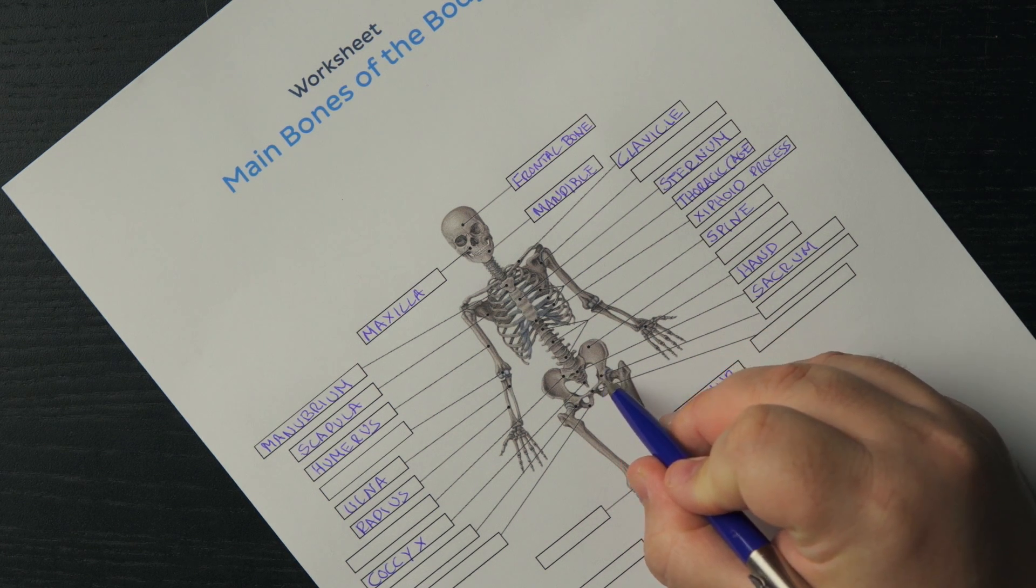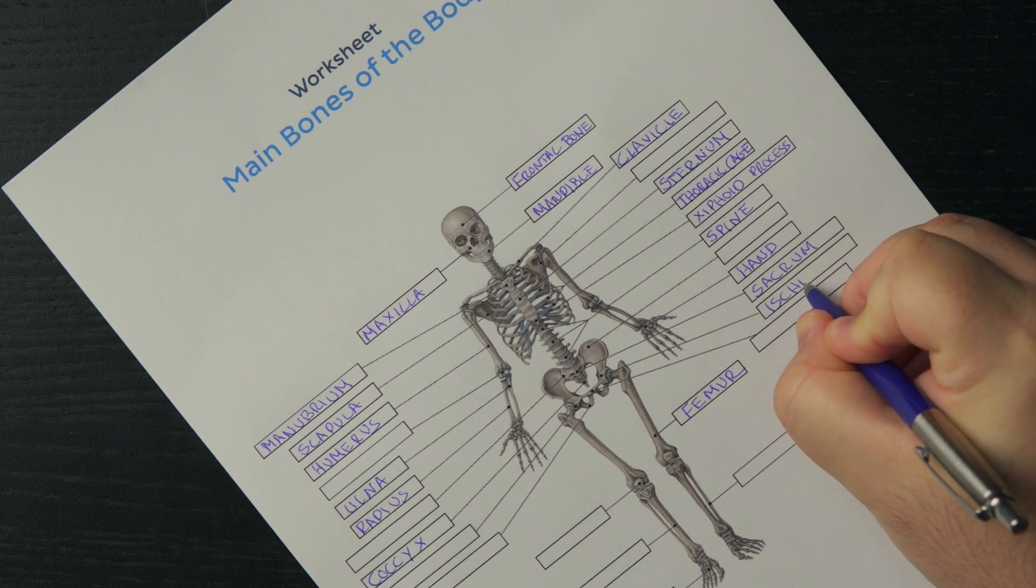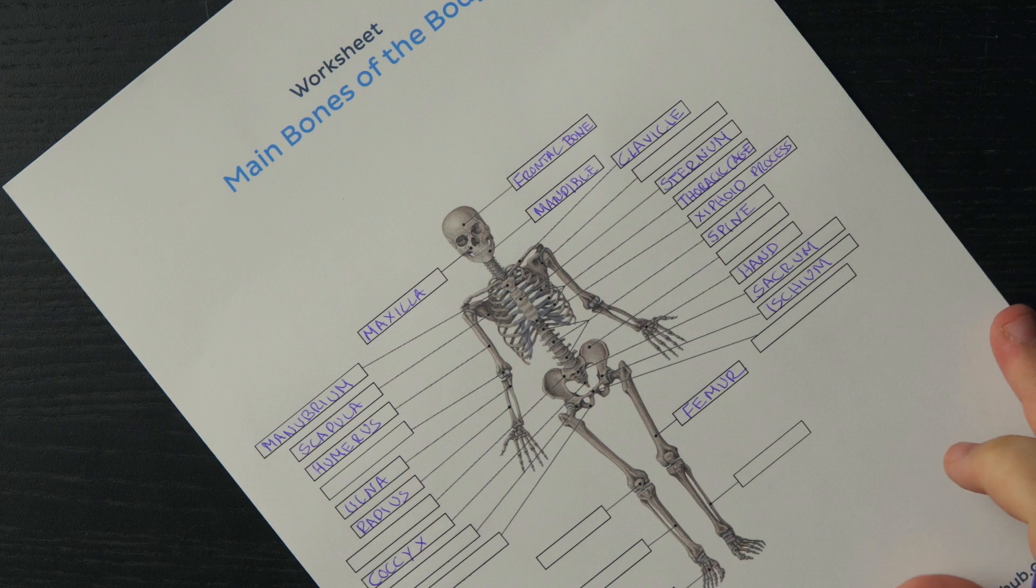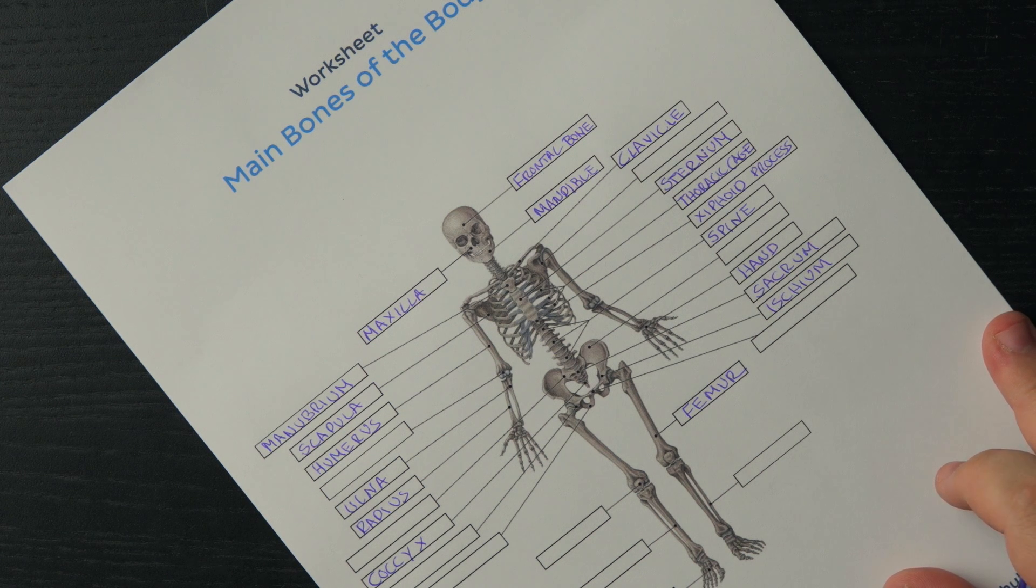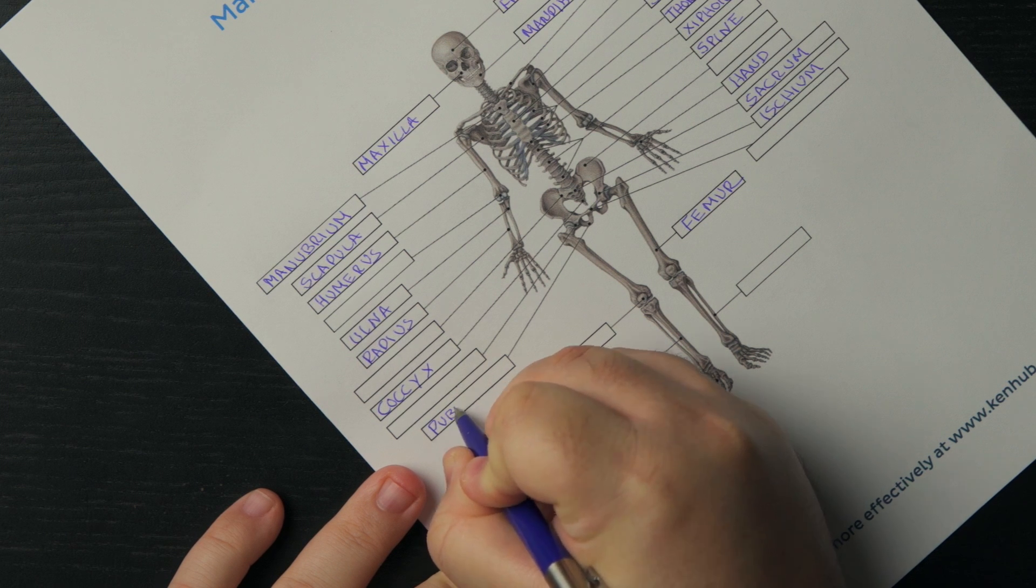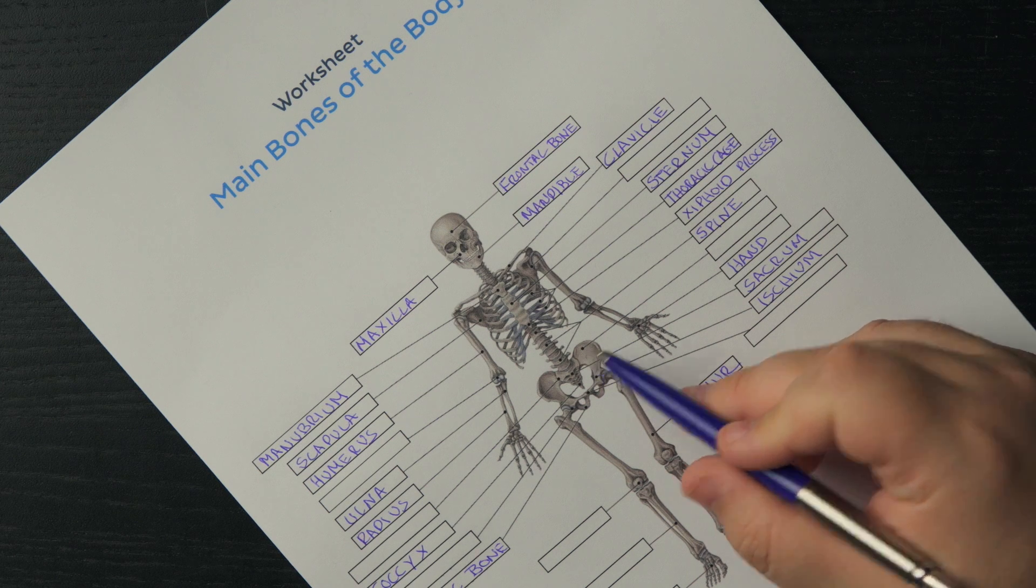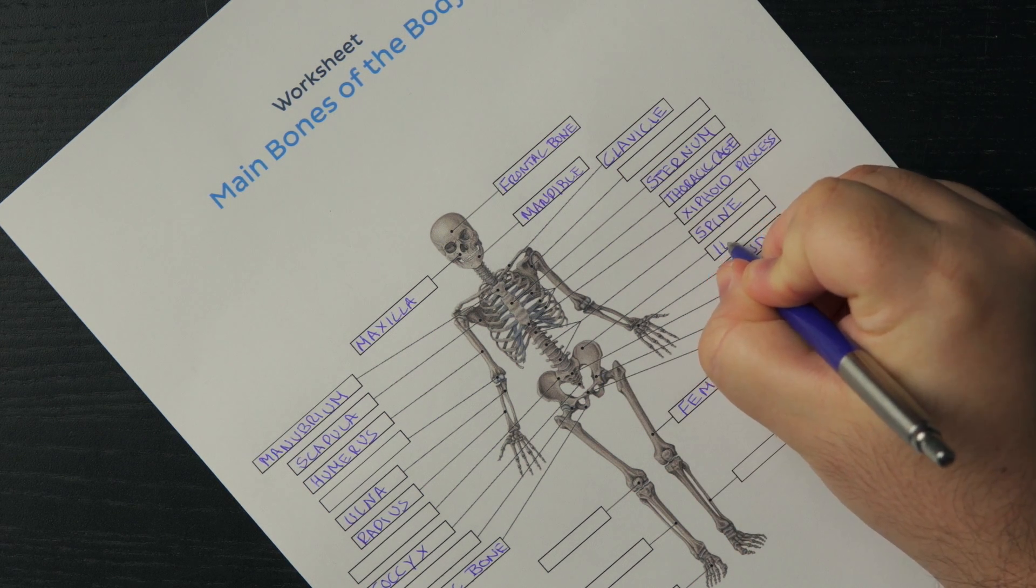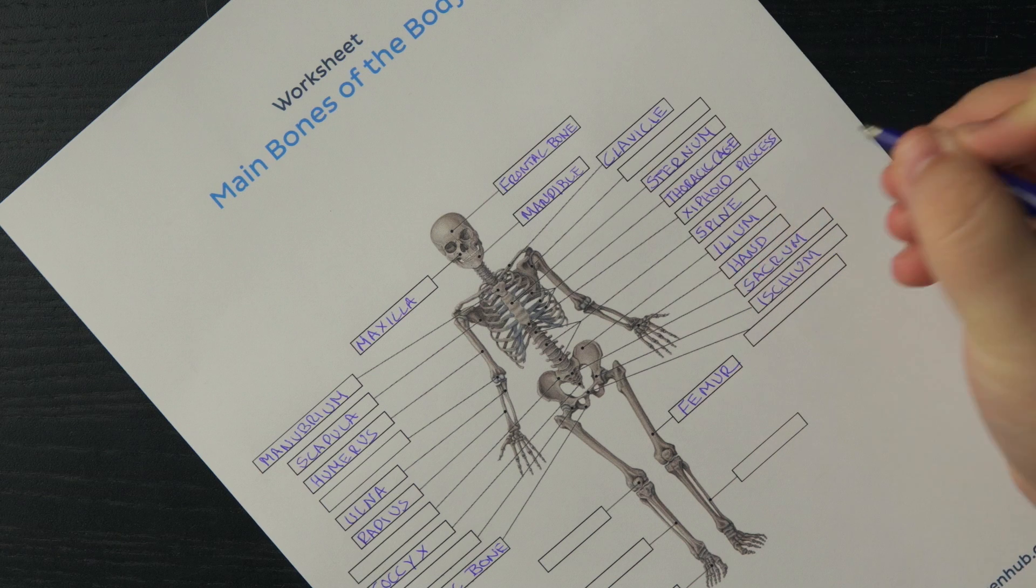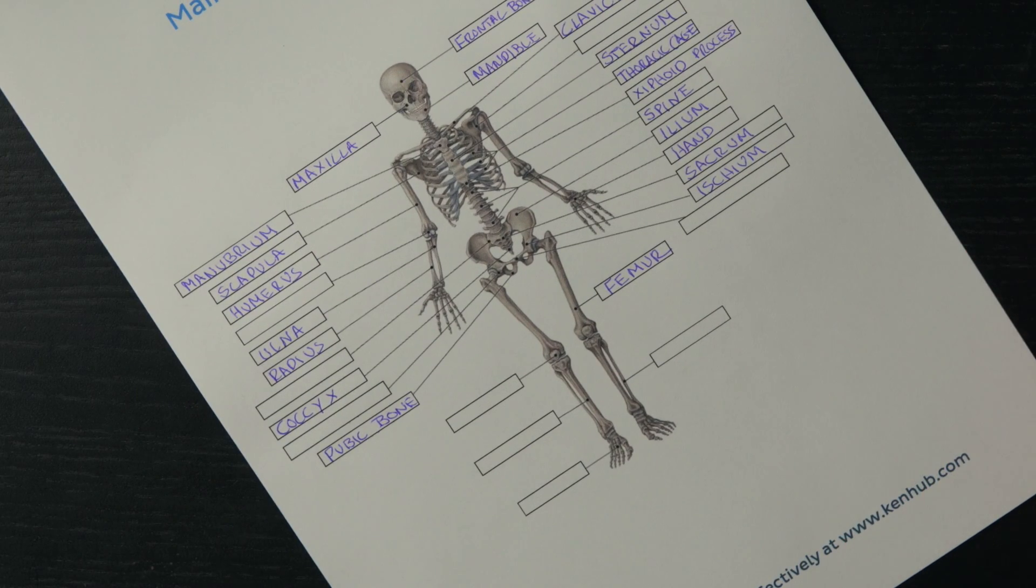Time to move down towards the pelvis, where we have a few labels to look at. We have this label pointing at one of the hip bones, known as the ischium. Right in the middle of the pelvis, we find here this label pointing at one of the pubic bones. And at the top, we see clearly the ileum spreading its wings. But no, these wings unfortunately were not made for flying. We are done with the hip bones.